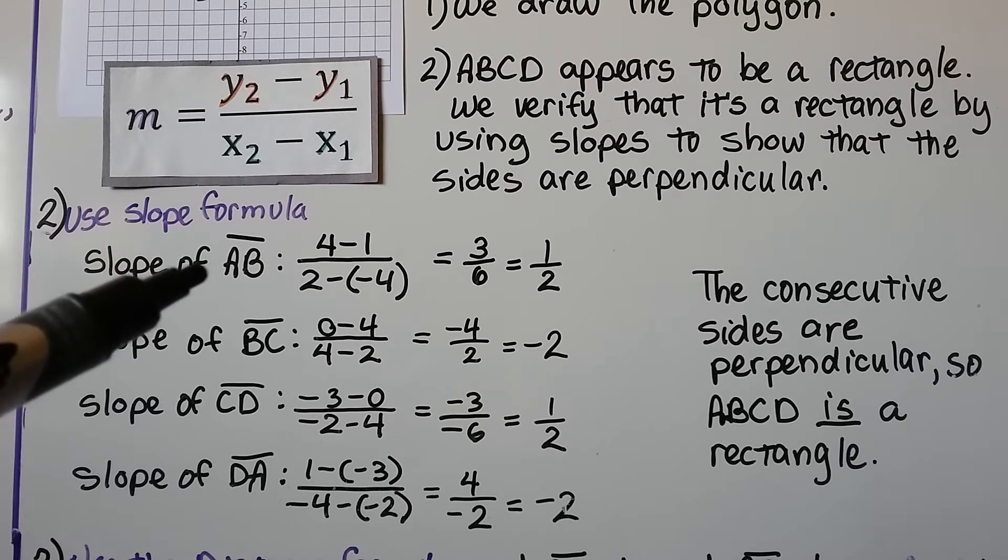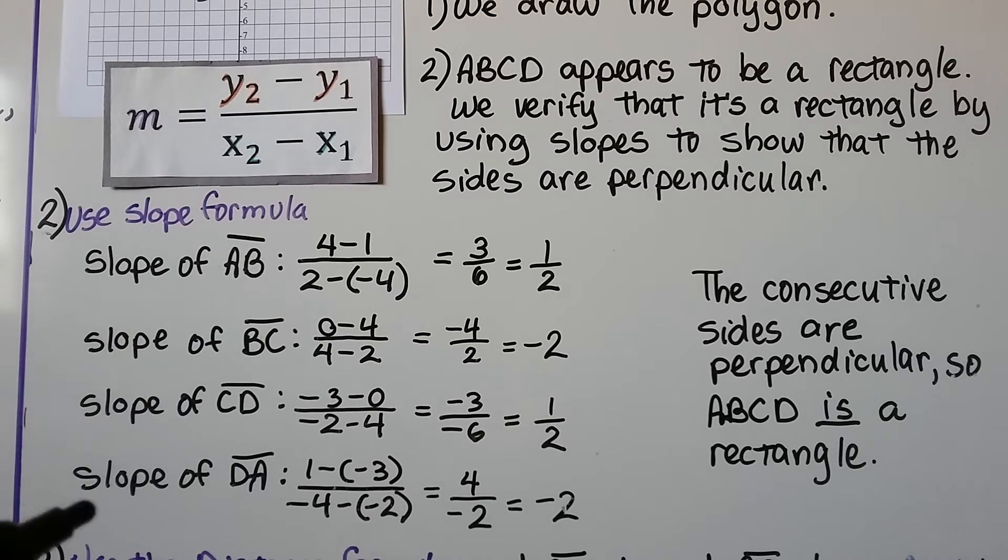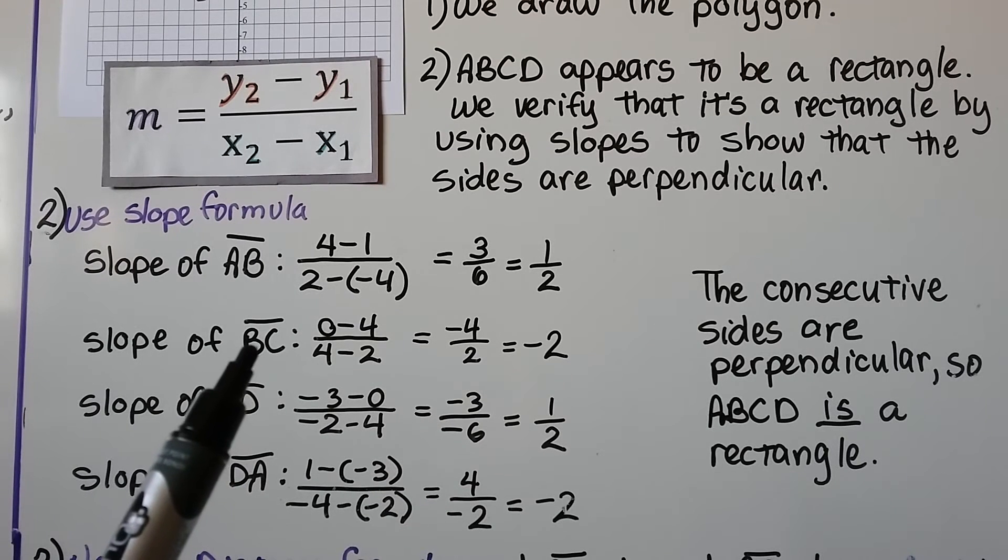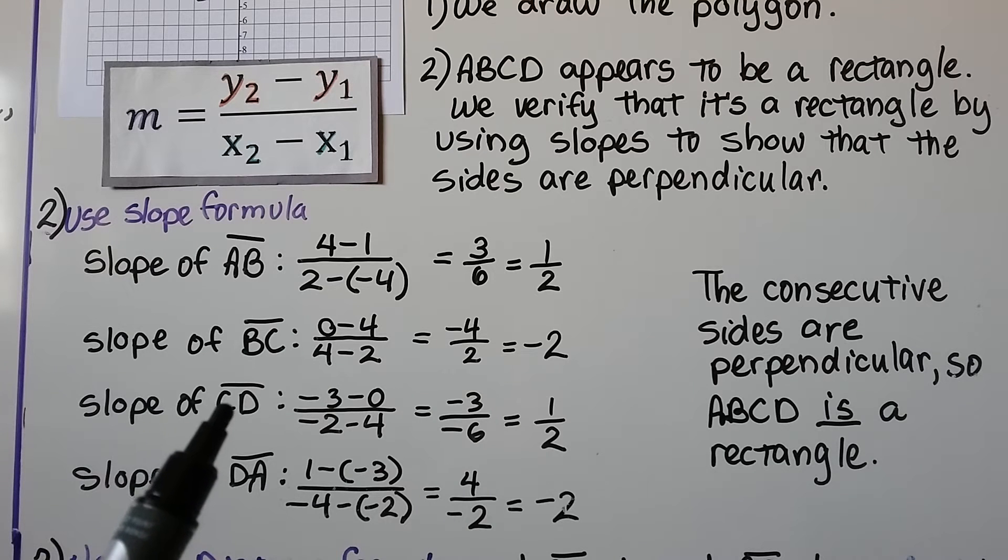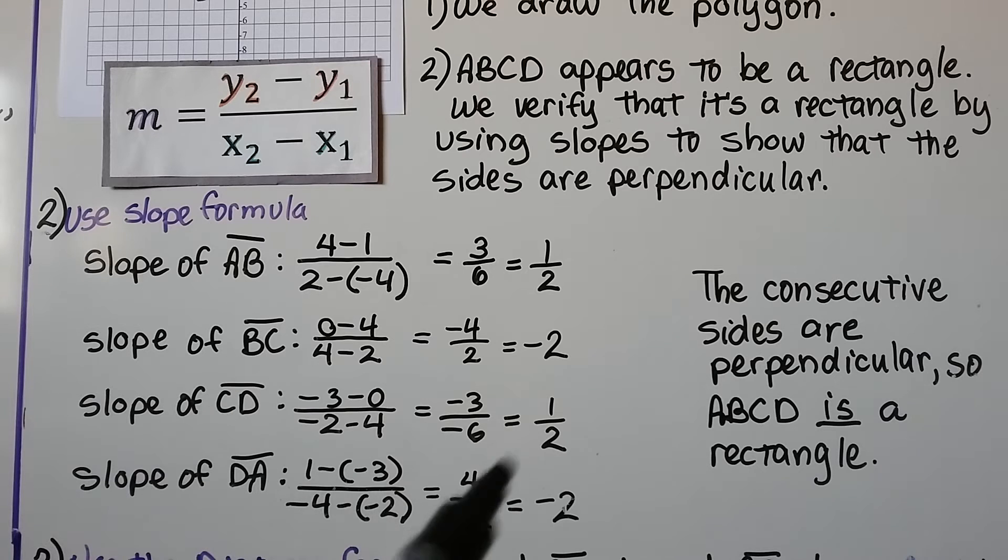The slope of a, b is 4 minus 1 over 2 minus negative 4 using our x and y values. And we get that the slope of segment a, b is a half. The slope of segment b, c is negative 2. The slope of c, d, which you can also say is d, c if you want to read it from left to right, but the book has it this way, would be a half. And the slope of d, a or a, d if you read it left to right, but the book has it as d, a would be a negative 2. The consecutive sides are perpendicular, so a, b, c, d is a rectangle. So now we know what formula to use to find the area.